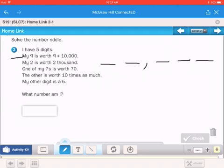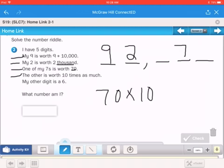My nine is worth 9 times 10,000. So that would be a 9 in the 10,000s place. My 2 is worth 2,000. So I've got to find my 1,000s place and put a 2. One of my 7s is worth 70. So that goes right there in the 10s place. That's where that would go.